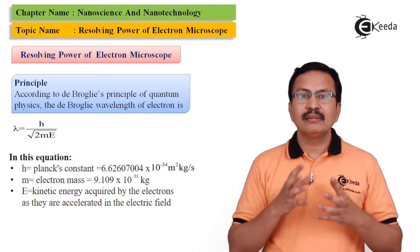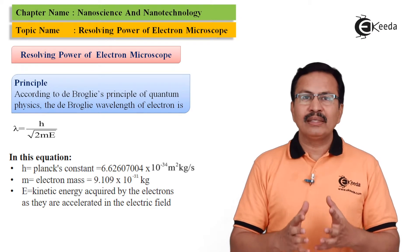And E represents the energy acquired by the electron.